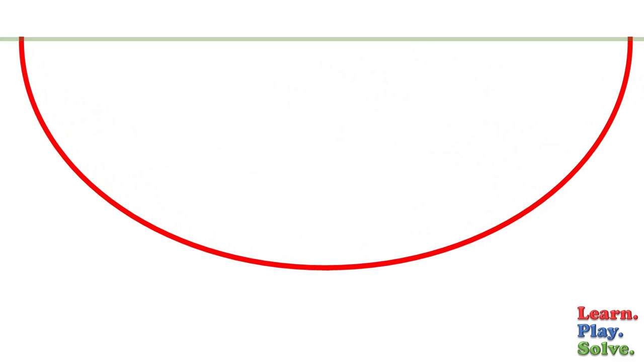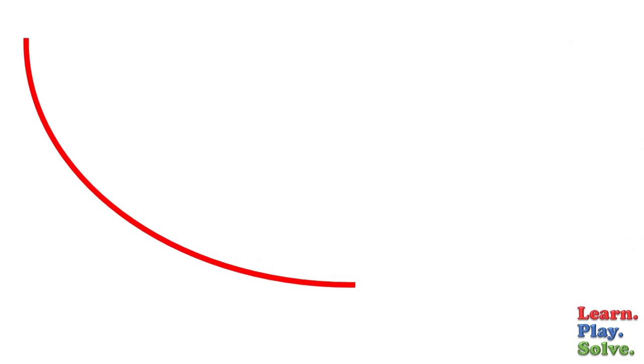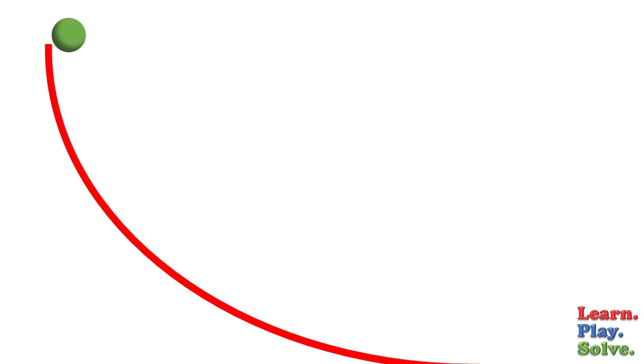Also, if you break a cycloid in half, then release a ball to roll down it like a ramp, this is the exact shape which allows the ball to descend the ramp in the shortest time.